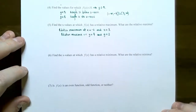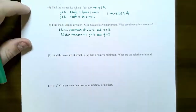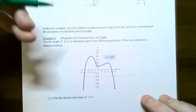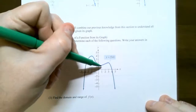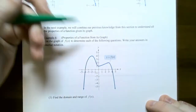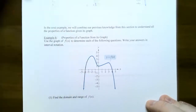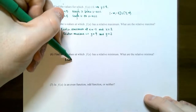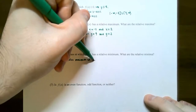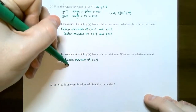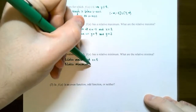Number six: find the x values at which f(x) has a relative minimum and what are the relative minima. There is only one relative minimum — it occurs at the lowest part of the valley, at x = 0. The relative minimum is y = 1. So: relative minimum at x = 0, and the relative minimum is y = 1.